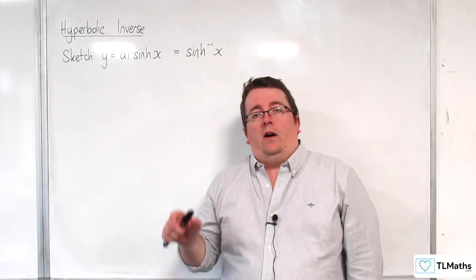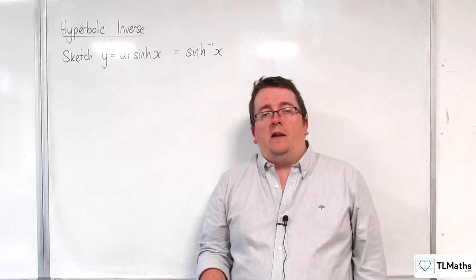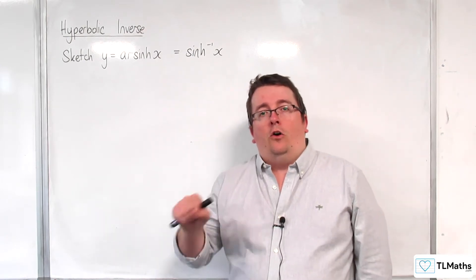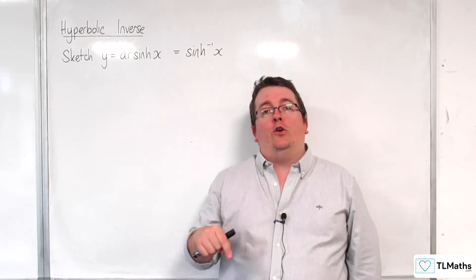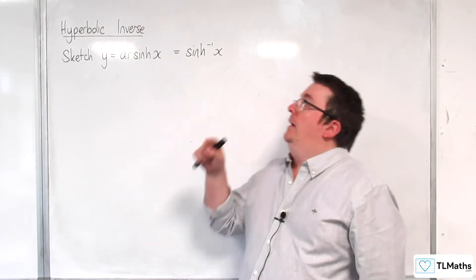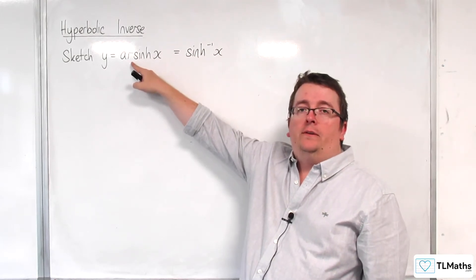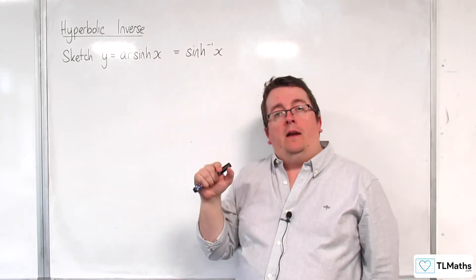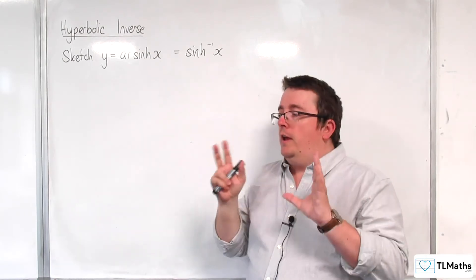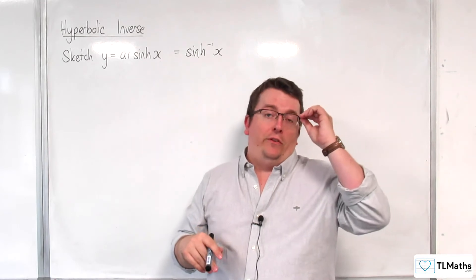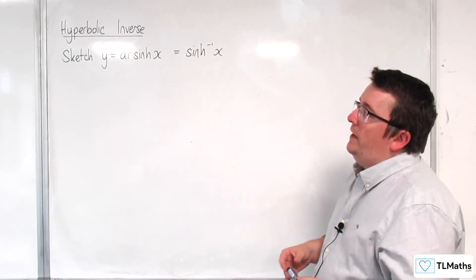That's because arc sine of x is talking about an arc, the length of an arc of a circle. Whereas arsinh of x is actually looking at an area, and hence you've got 'ar' for area in front of it. It's looking at the area between the rectangular hyperbola and the origin. If you Google it, you'll be able to see some images of it, so you can see where the difference lies. That's why we don't have the 'c' there.